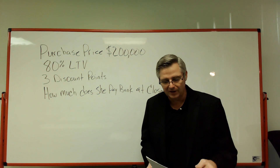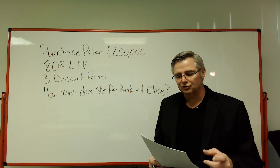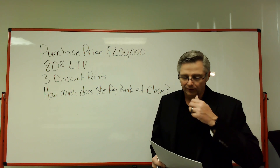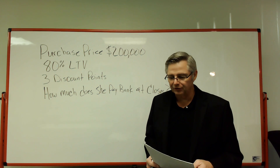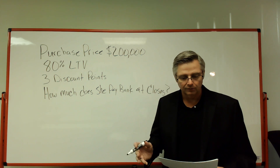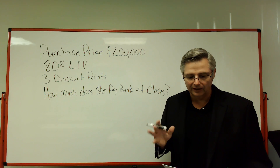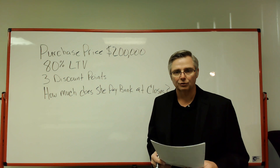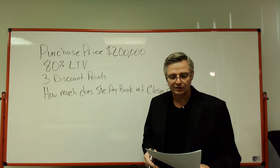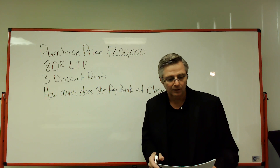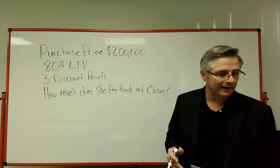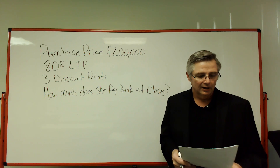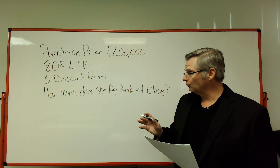Question number four says: a buyer is purchasing a home for two hundred thousand dollars. She applies for an eighty percent LTV — loan to value — loan. Her bank is going to charge her three discount points. The question asks: how much money will she pay her bank at closing for this loan?